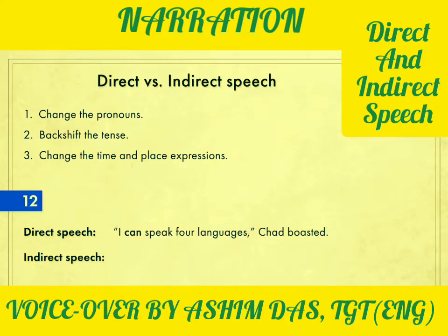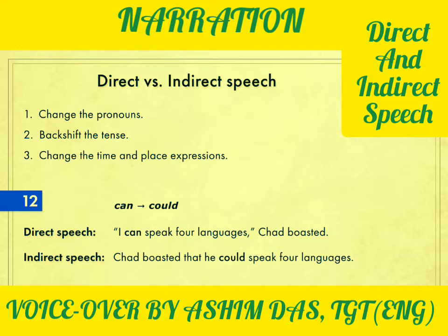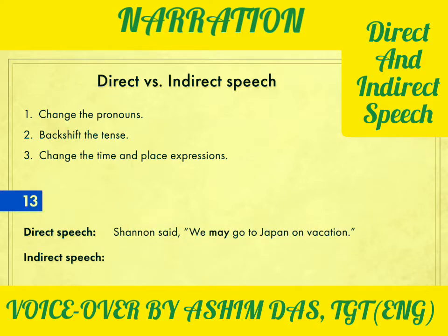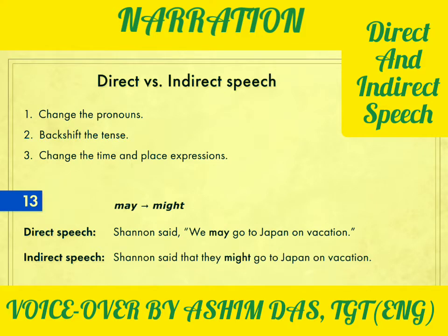Sentence twelve: 'I can speak four languages,' Chad boasted — to boast means to brag or talk proudly about yourself. The indirect speech: Chad boasted that he could speak four languages. Notice 'can' becomes 'could.' Sentence thirteen: Shannon said, 'We may go to Japan on vacation.' Shannon said that they might go to Japan on vacation. 'We' becomes 'they,' and 'may' changes to 'might,' which is the past form of 'may.'